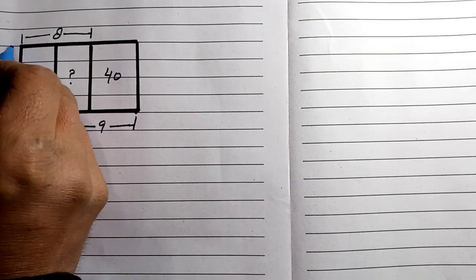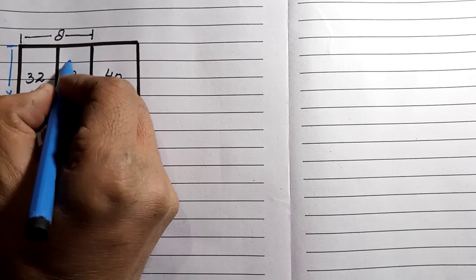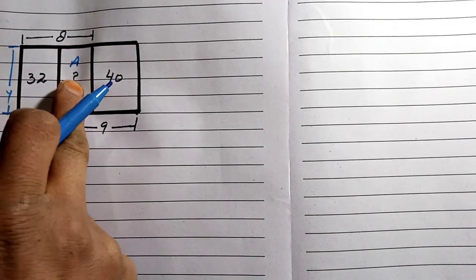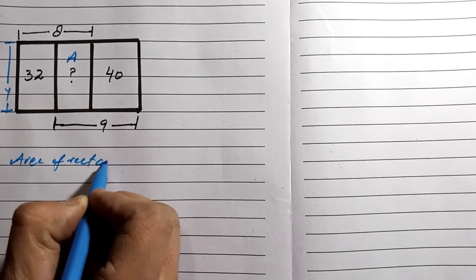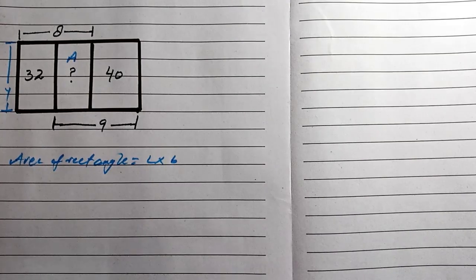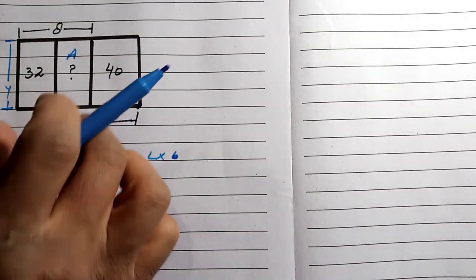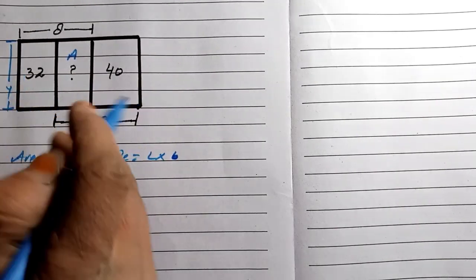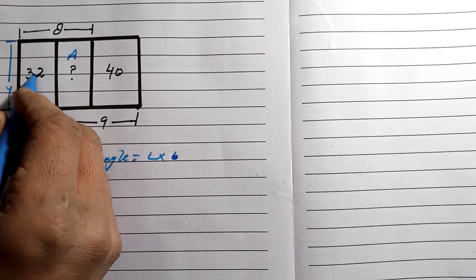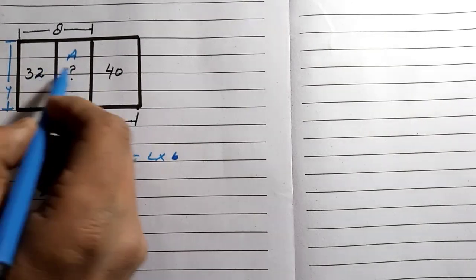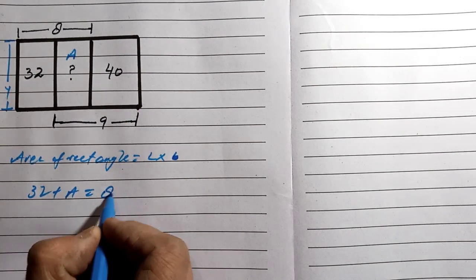First of all, we let the length of this side be any variable y, and we let this side be a. So we are finding the area of this region a. We know that area of a rectangle equals length multiplied by width. So looking at these two rectangles, the area of these two rectangles is a plus area of rectangle which is 32 plus a, which equals length times breadth — so length is y and breadth is 8, giving 8y.